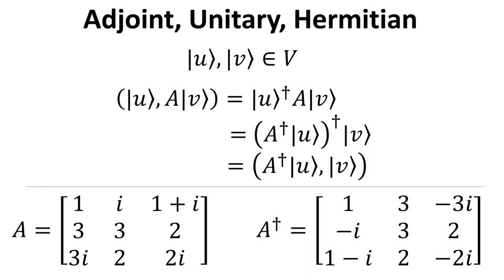We can also obtain the definition of the adjoint using the property of the adjoint operator we just showed. Consider the inner product of ket U with operator A multiplied by ket V. Per the definition of the inner product, we have the adjoint of ket U multiplied by operator A and ket V. Using the product rule of adjoint allows us to combine operator A with ket U. Finally, this recovers the inner product expression, but now with the adjoint of A acting on ket U instead.